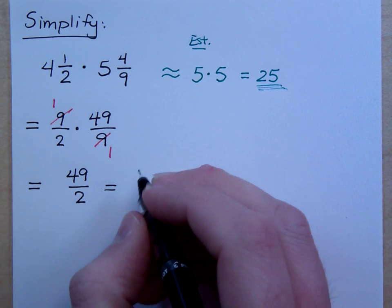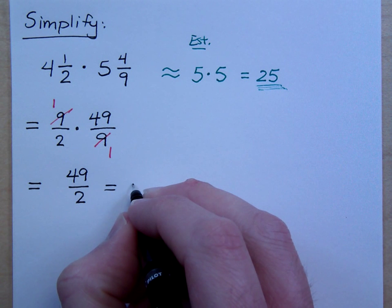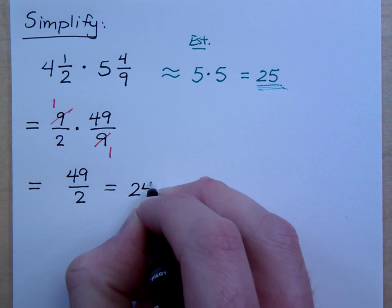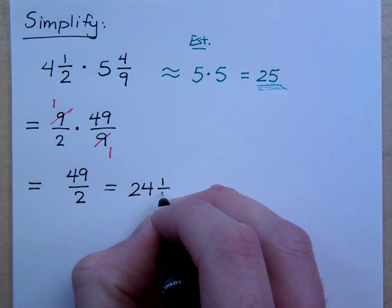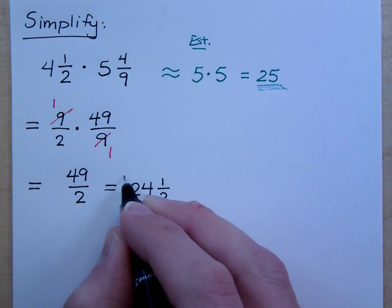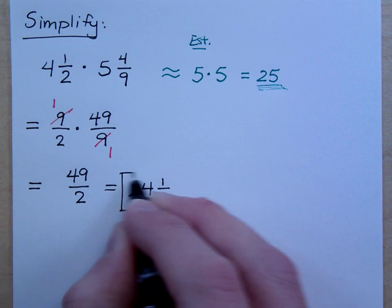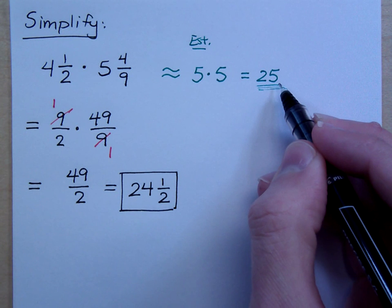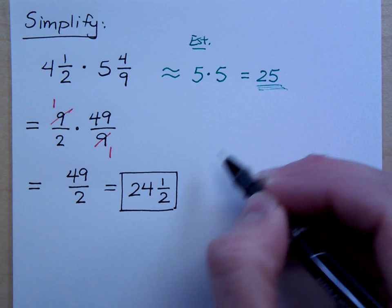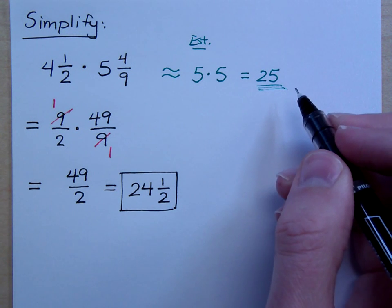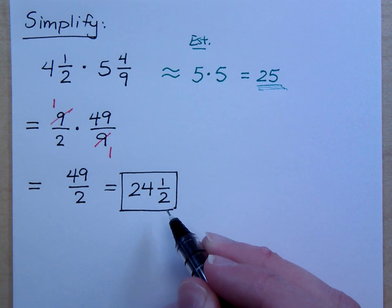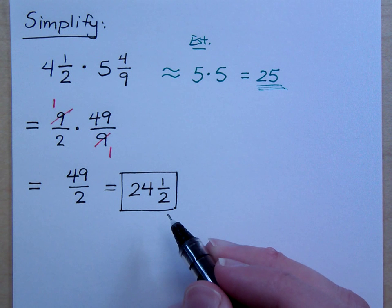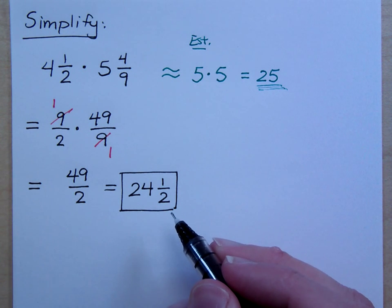How many times does 2 go into 49? It goes in 24 times with a remainder of what? Remainder of 1, so that's over 2. So this is what my exact answer is, right? And I estimated the answer to be 5. So I feel pretty good about my answer, right? Does that mean that my answer is right? Not necessarily. It just means that my answer is reasonably close. It's reasonable. It makes sense.